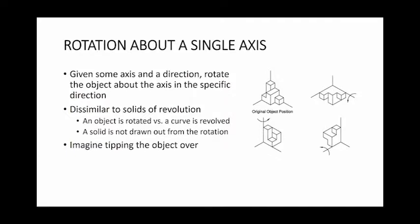It's dissimilar to what we saw in solids of revolution. In solids of revolution we had a curve and we were revolving that curve 360 degrees around a single axis. What we're dealing with in rotations about a single axis is that we're only pushing the object 90 degrees over and we're only rotating about a single axis. We're also not drawing out a solid from that curve. We're simply pushing the object over.